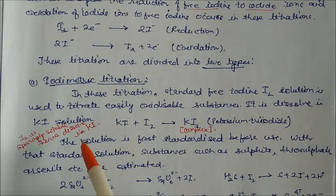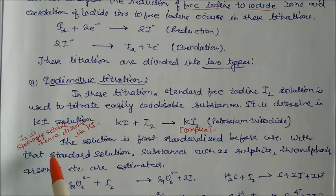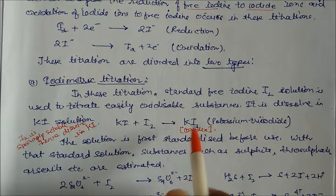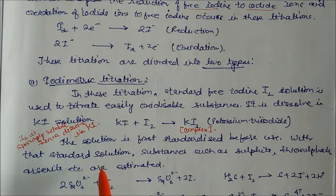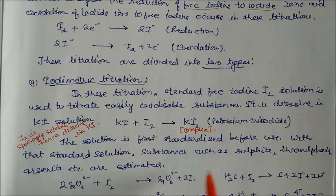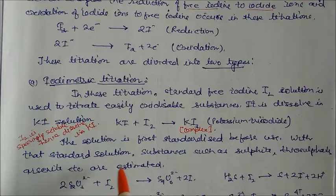Iodine is sparingly soluble in water, so it is first dissolved in potassium iodide solution, forming the complex KI₃. The solution is standardized before use. Substances like sulfite, thiosulfate, and arsenate are estimated with the help of this standard iodine solution.